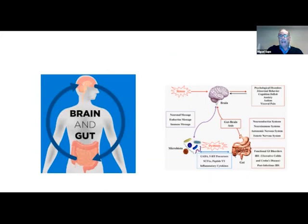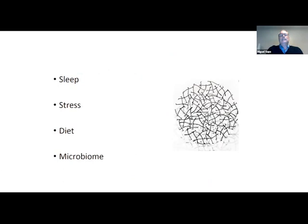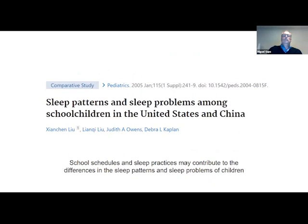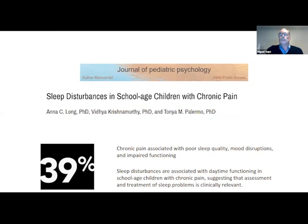How does this apply to the brain-gut axis? We cannot cover everything in a few minutes, but let's cover some issues like sleep, stress, diet, and microbiome. Children sleep less during the school year because they have a rigorous curriculum — many do extracurricular activities and don't have much time to sleep. That happens in the US and in China. That decrease in hours of sleep is important because if you don't sleep well, you're not going to deal well with pain the next day.